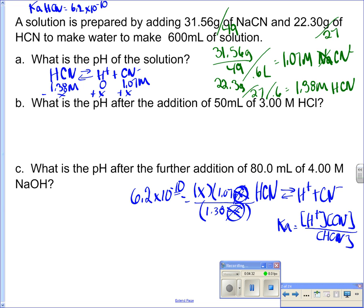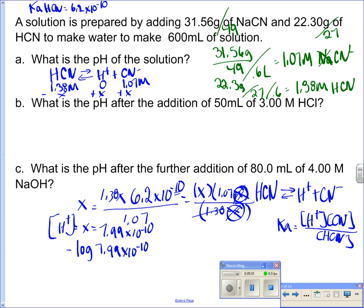All I have to do is take 6.2 and times it by 1.38 and divide by 1.07, and that's going to give me X. And so my X value on this particular problem is 7.99 times 10 to the minus 10. Well, what is that X value? That X value is my H+, so then I easily can just minus log this answer. So if I minus log 7.99 times 10 to the minus 10, that's going to give me 9.1 for my pH.